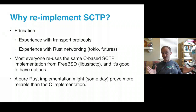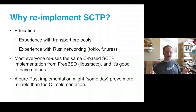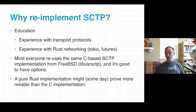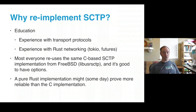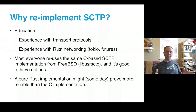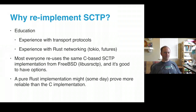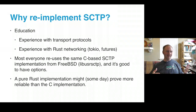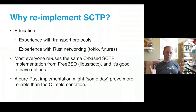Why do I want to reimplement SCTP? First and foremost, education — I wanted to get more experience with transport protocols. I've implemented many protocols before like HTTP, but a transport protocol is a lot more challenging, and I wanted that experience. I also wanted experience with Rust networking tools — Tokio, Futures, and all that. There is a C-based SCTP library called libusrsctp — it's the FreeBSD kernel implementation of SCTP taken out of the kernel with a bunch of ifdefs for userspace. You see it in Chrome, Firefox, the WebRTC reference libraries — everyone uses the same C library. I think it's good to have a second implementation, and someday it may be more reliable. You have the Rust advantages of memory safety.